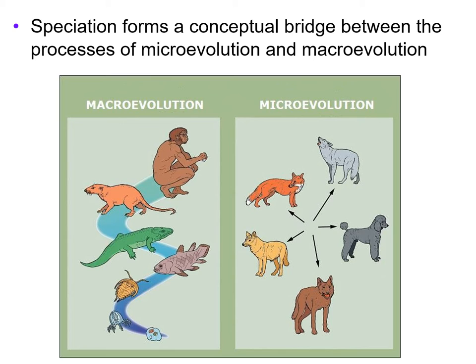In micro evolution, the changes in the allele frequency caused these subtle changes in the wolf, which created these other variations seen in this image. So that would be micro evolution — all of the offspring, all of the branches, the products of the branches still kind of look the same. Whereas with macro evolution, it's going to be at a larger scale that's above the species level. That original cell eventually gives rise to this actual organism, the human, which is on a larger scale than micro evolution.